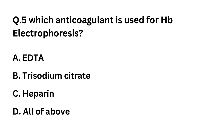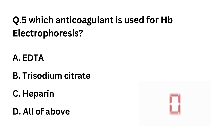Question 5: Which anticoagulant is used for Hb electrophoresis? Option A: EDTA. Option B: Trisodium citrate. Option C: Heparin. Option D: All of the above. The correct answer is Option A: EDTA.